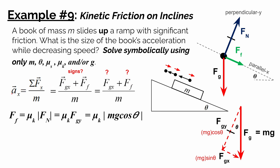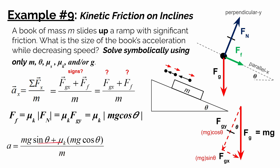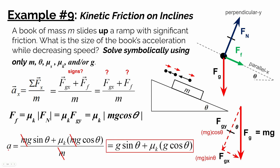Putting it all together, acceleration equals fgx plus the frictional force, all divided by m: that's mg sine theta plus mu sub k times mg cosine theta, divided by m. Since mass appears in the denominator and in each numerator term, the m's cancel, giving the simplified final expression: acceleration equals g sine theta plus mu sub k times g cosine theta.